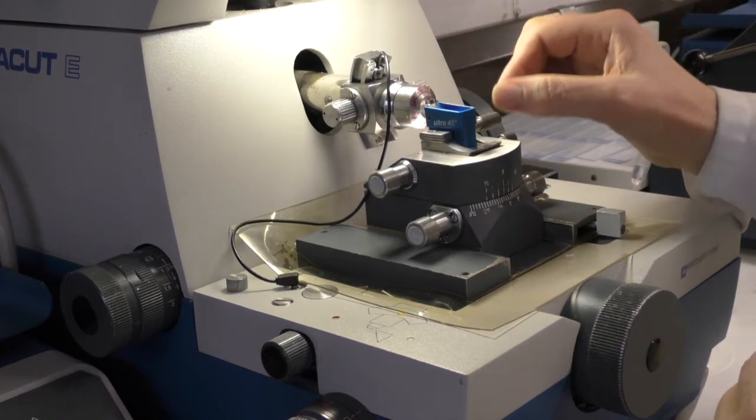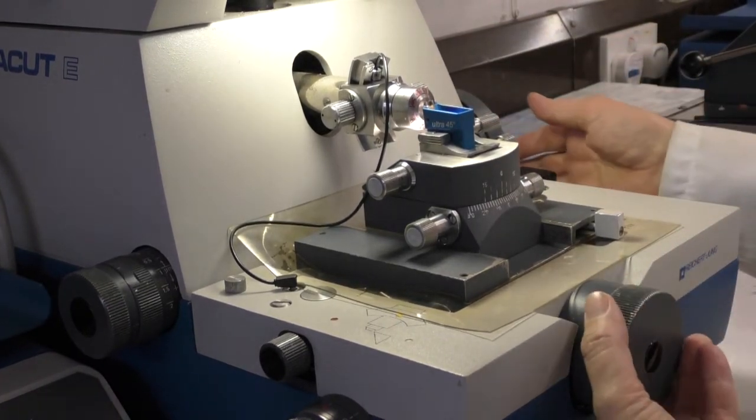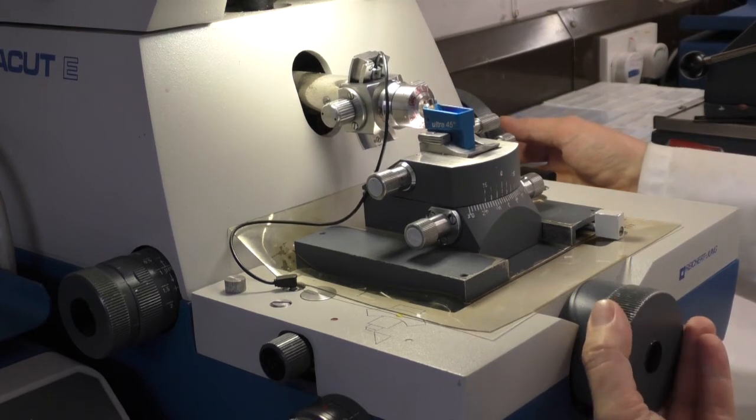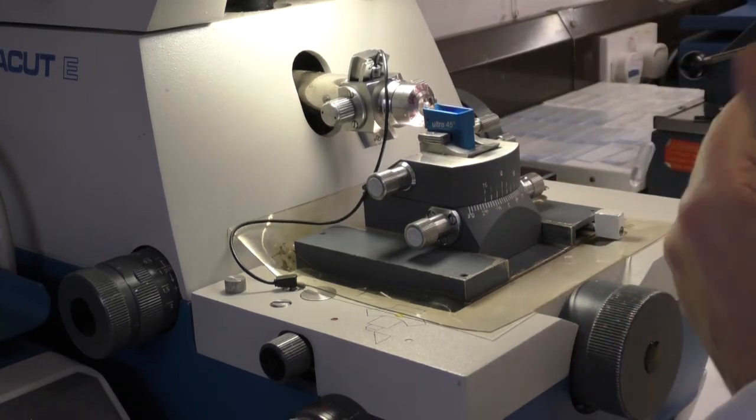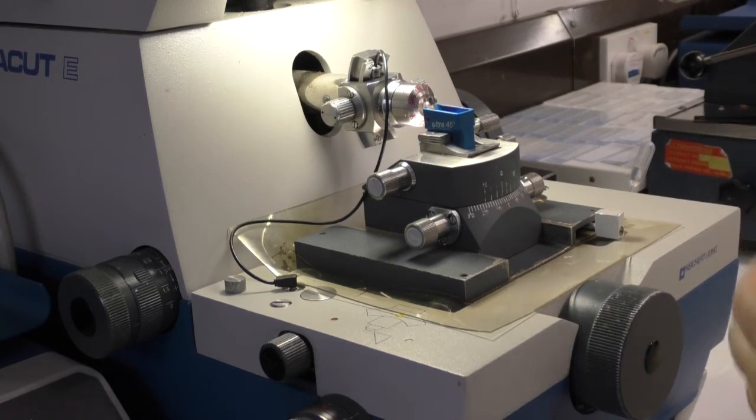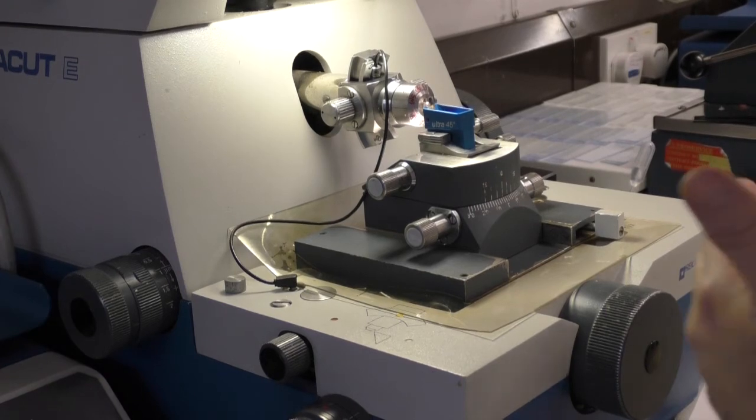So once you've placed the chuck in the microtome, and the diamond knife in front of it, you can then manipulate the position of the diamond knife, so that it comes very close to the part of the chuck, to the resin in the chuck, where you wish to cut the sections. You can get it within a few nanometres, and then you're in a position to begin the cutting process.